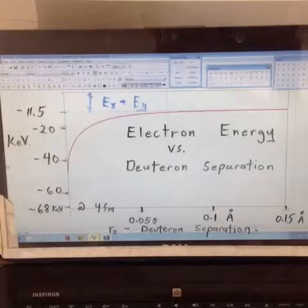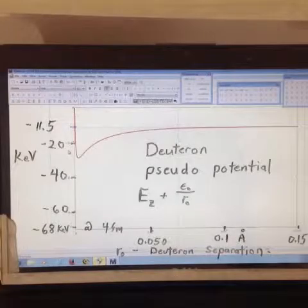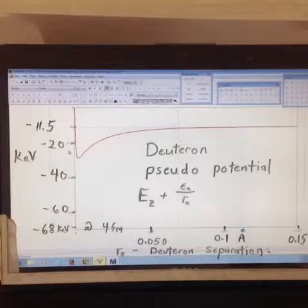This slide shows the electron energy versus separation that we found last time. In the next slide, we add the repulsion energy to give the familiar pseudo-potential for the two deuterons.